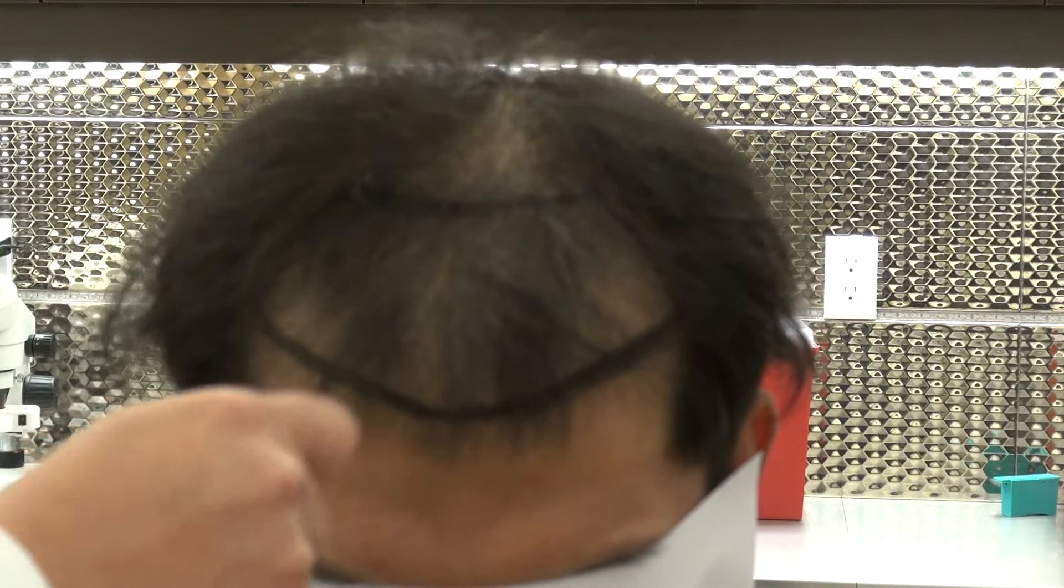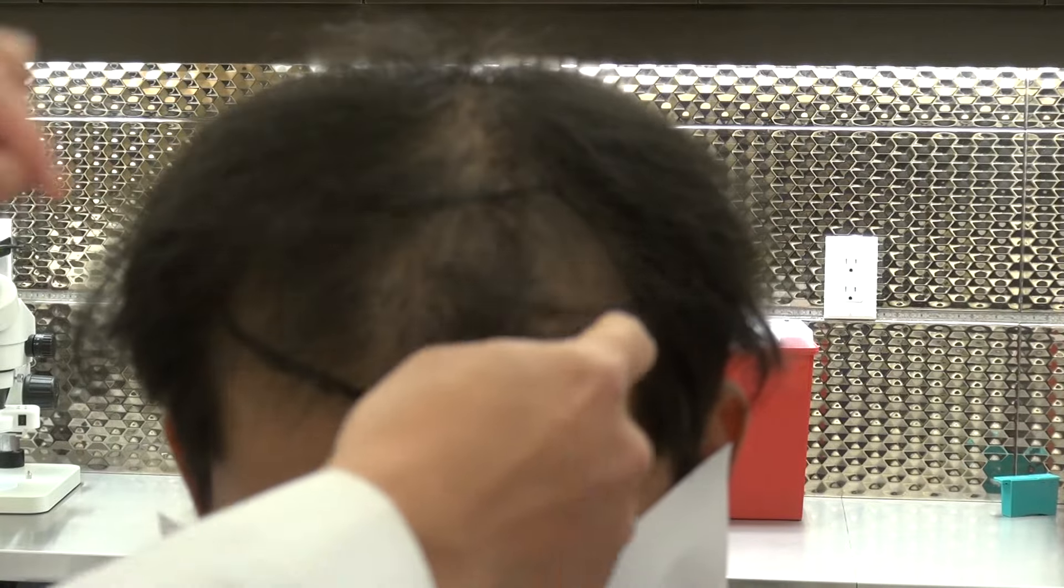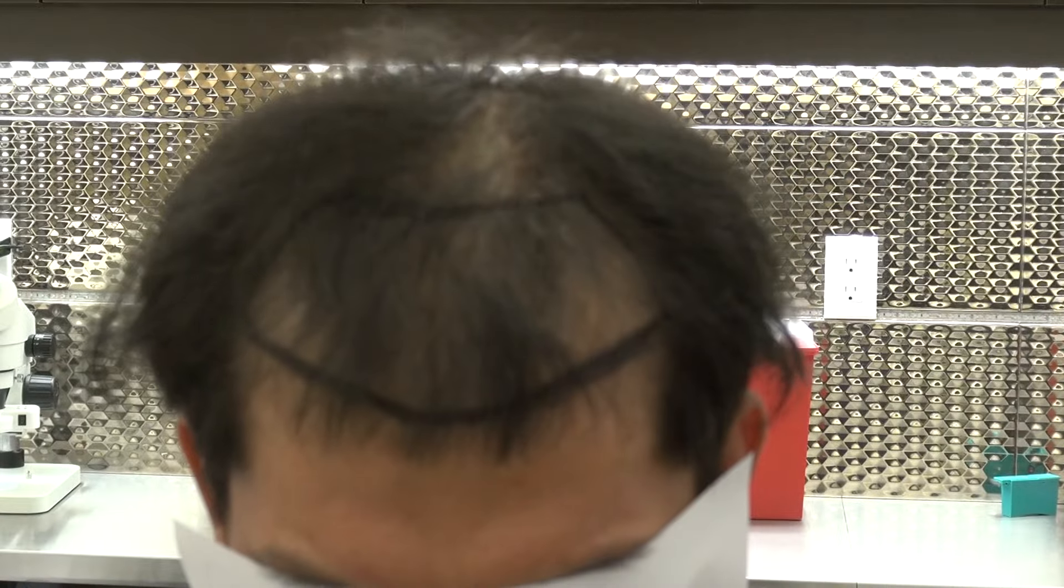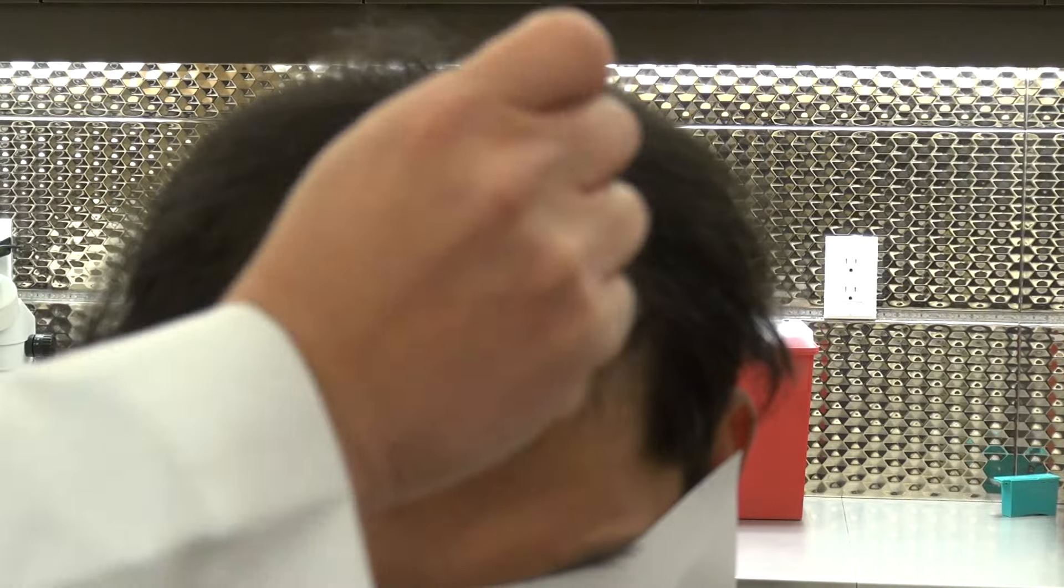Once we get the shape done, we zigzag—no straight hairline. The great thing is this client has some existing hair already, so we're following his natural hairline. We don't want to change who he is. No straight hairline—we zigzag.